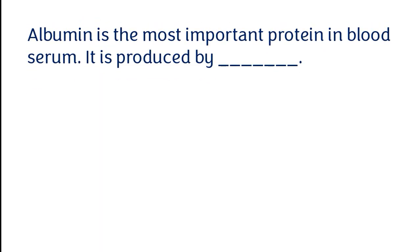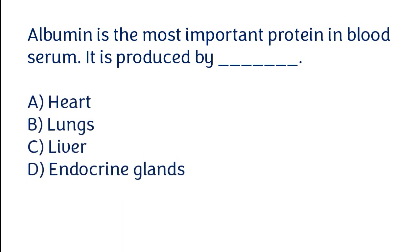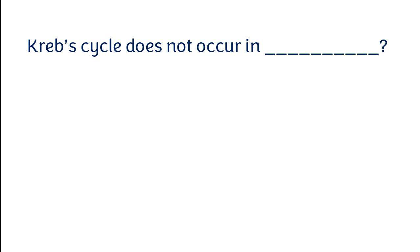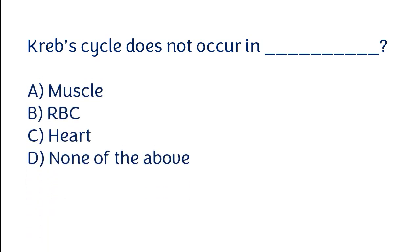Albumin is the most important protein in blood serum. It is produced by: heart, lungs, liver, or endocrine glands. The correct answer is option C — albumin is produced by the liver. Krebs cycle does not occur in: muscle, RBC, heart, or none of the above.